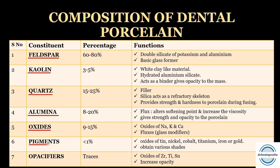Next are the pigments — the coloring agents present at less than 1%. Mainly oxides of tin, nickel, cobalt, titanium, iron, or gold are used to give different shades, enabling shade matching with natural teeth. Next are the opacifiers, present in traces — basically oxides of zirconium, titanium, and tin — which increase the opacity of dental porcelain.